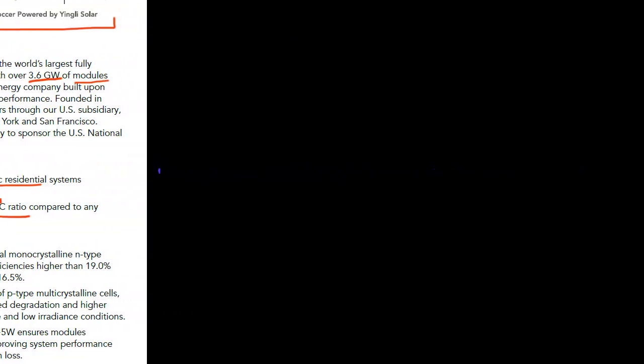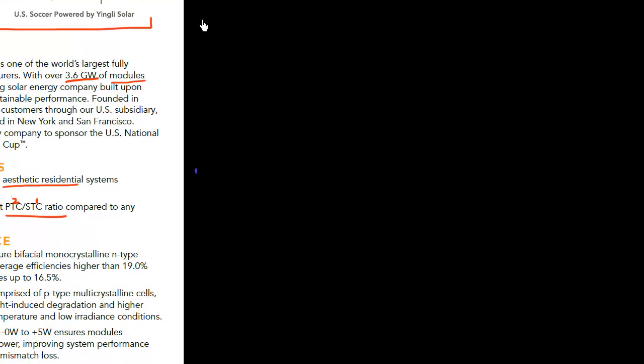So this PTC essentially corresponds to PVUSA test condition. And that particular test condition essentially corresponds to having an intensity, having a solar spectrum with an intensity which is normalized to 1000 watt per meter squared. And you use an AM 1.5 G spectrum.